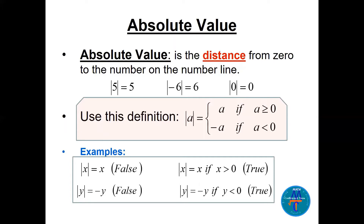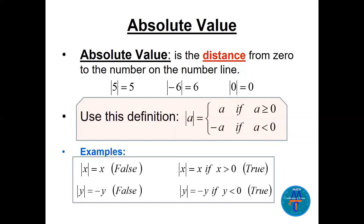When you have a specific number, the absolute value is easy — that number can be positive, negative, or zero, as you can see in the first three examples. Now the important general definition: the absolute value of a, where a is a variable, is equal to a if a is positive or zero, and equal to -a if a is negative. So the answer in absolute value is always positive.